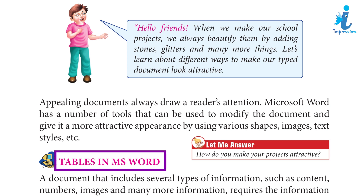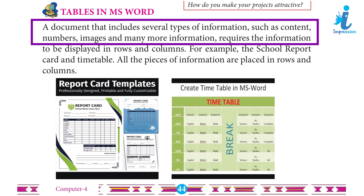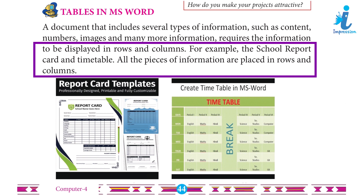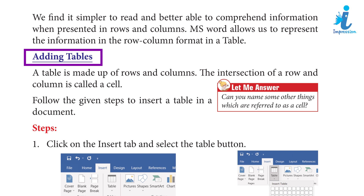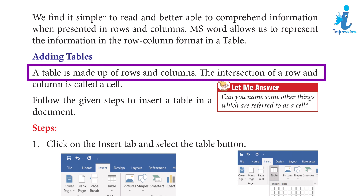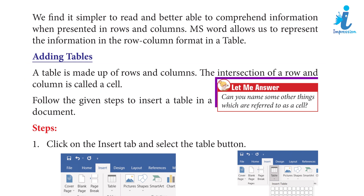Tables and MS Word: A document that includes several types of information such as content, numbers, images, and more requires that information to be displayed in rows and columns. For example, the school report card and timetable — all pieces of information are placed in rows and columns. We find it simpler to read and better able to comprehend information when presented this way. MS Word allows us to represent information in a row-column format in a table. A table is made up of rows and columns; the intersection of a row and column is called a cell.